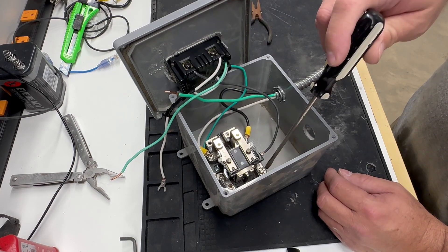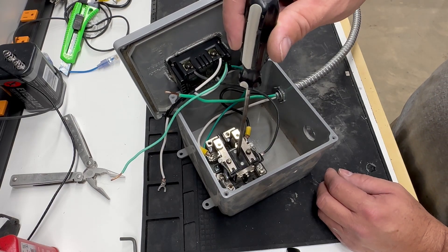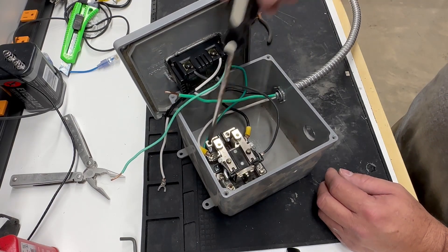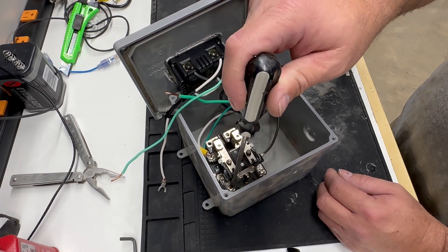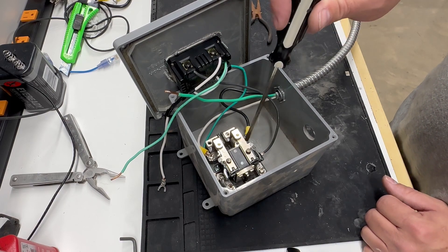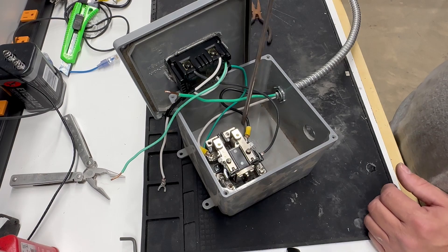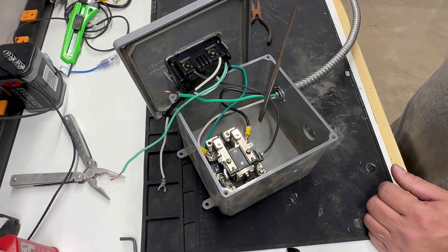So right now these connectors that are here and these connectors that are here are connected. When it energizes and pulls down, these connectors that are here will connect to these connectors that are here. So that's how you can pass your 220 volts from here to here or here to here depending on which way you want to be wired.